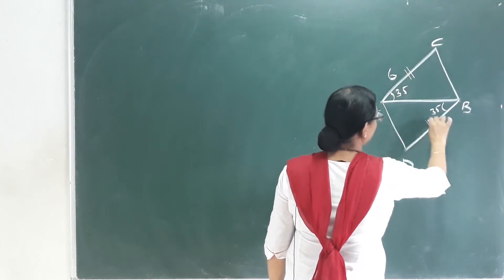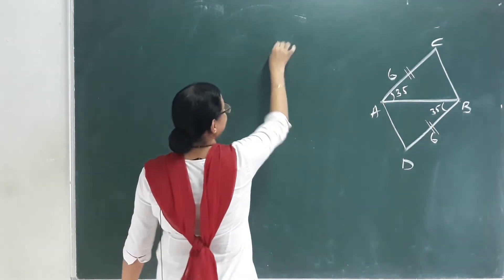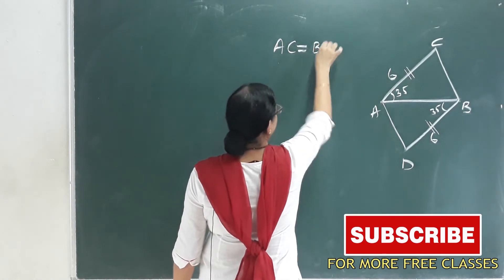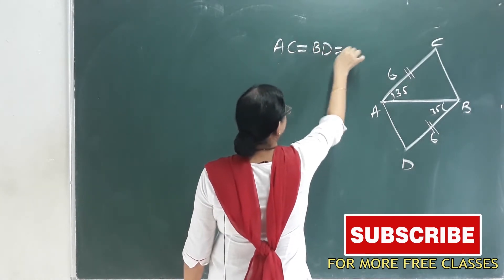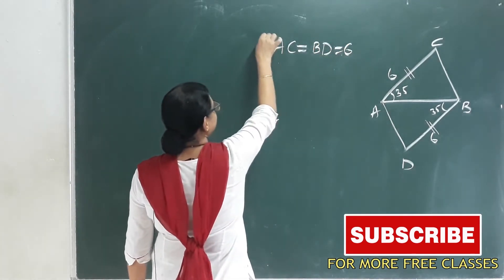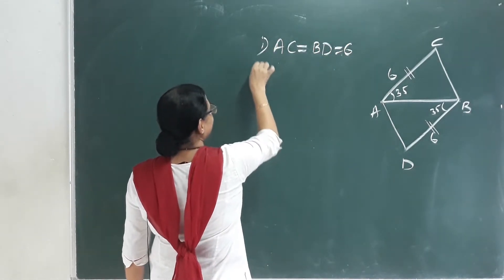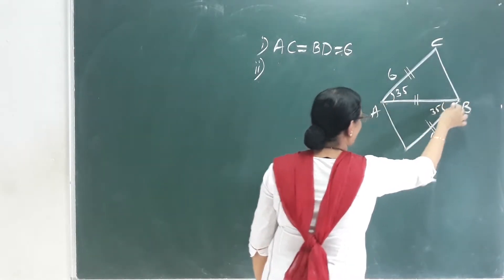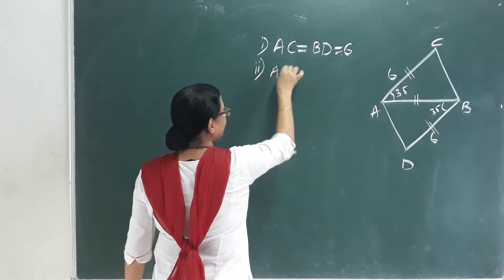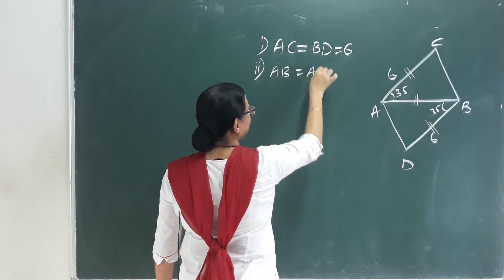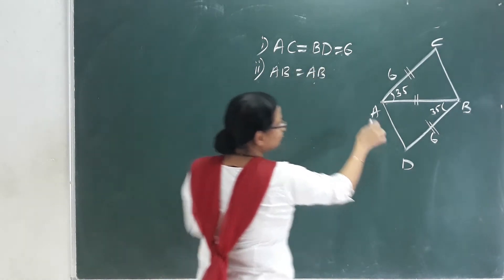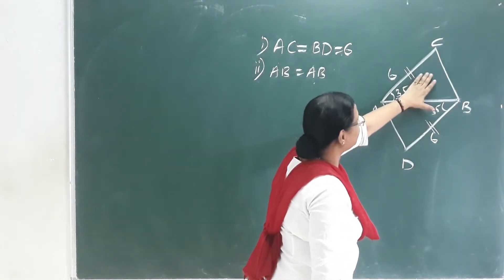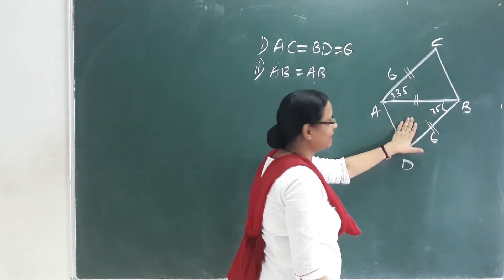AC is equal to BD. Now, AC equals BD equals 6 cm — that is the first point. Second point: these two triangles have a common side. AB equals AB — that condition. These two triangles share a common side.